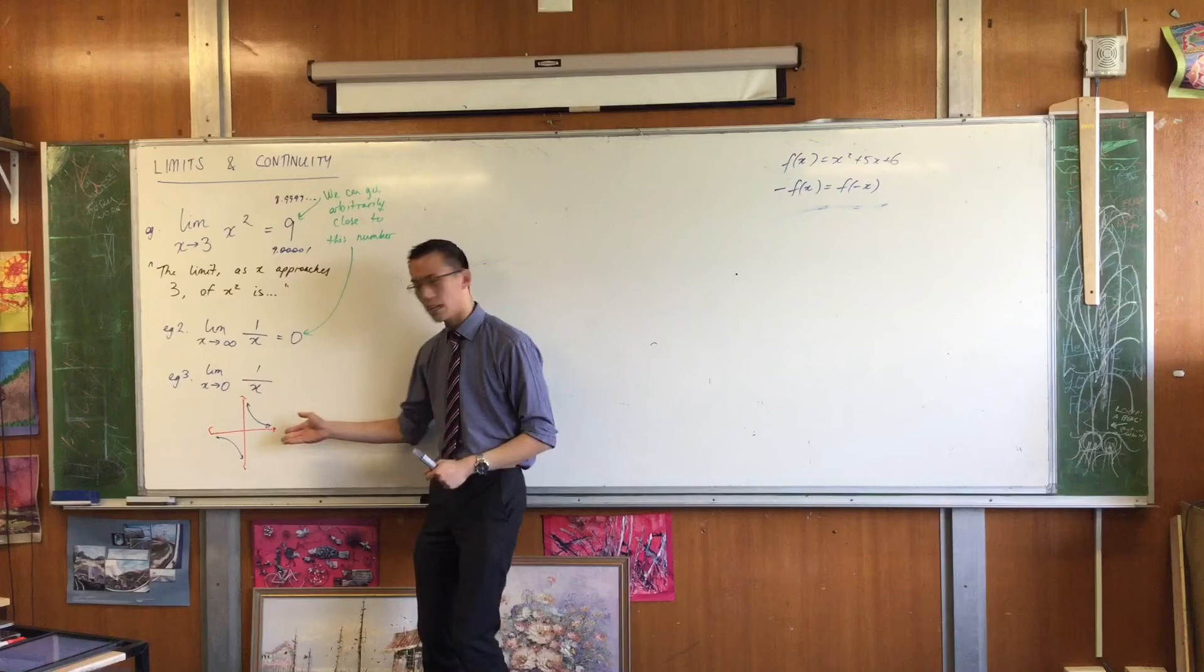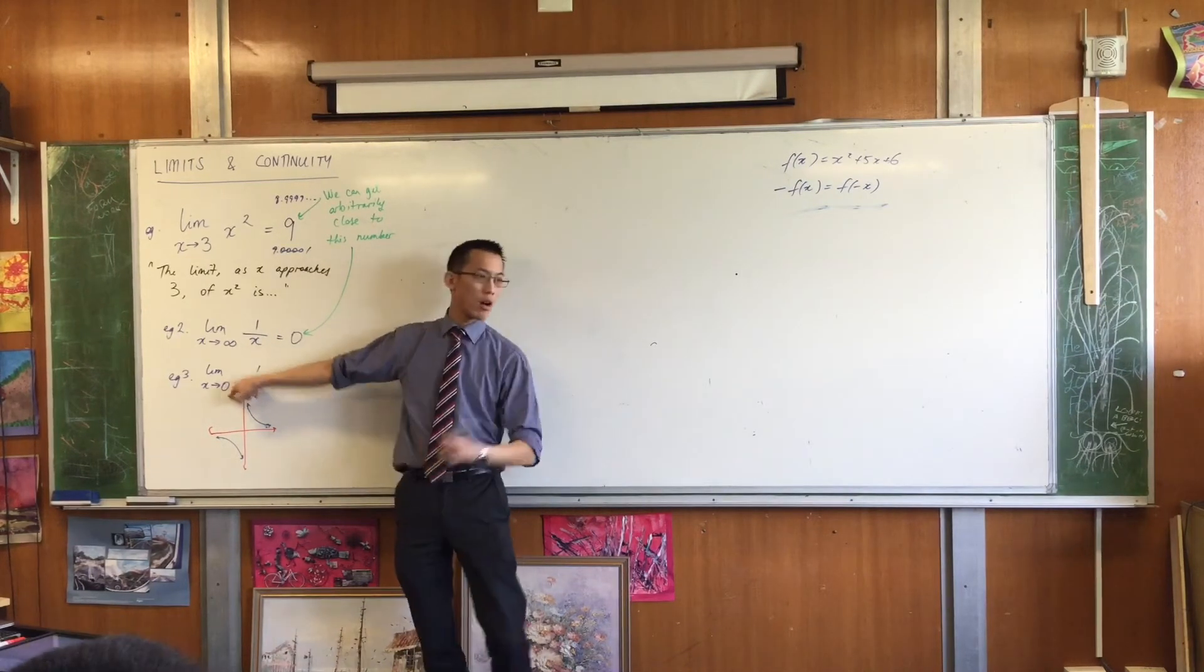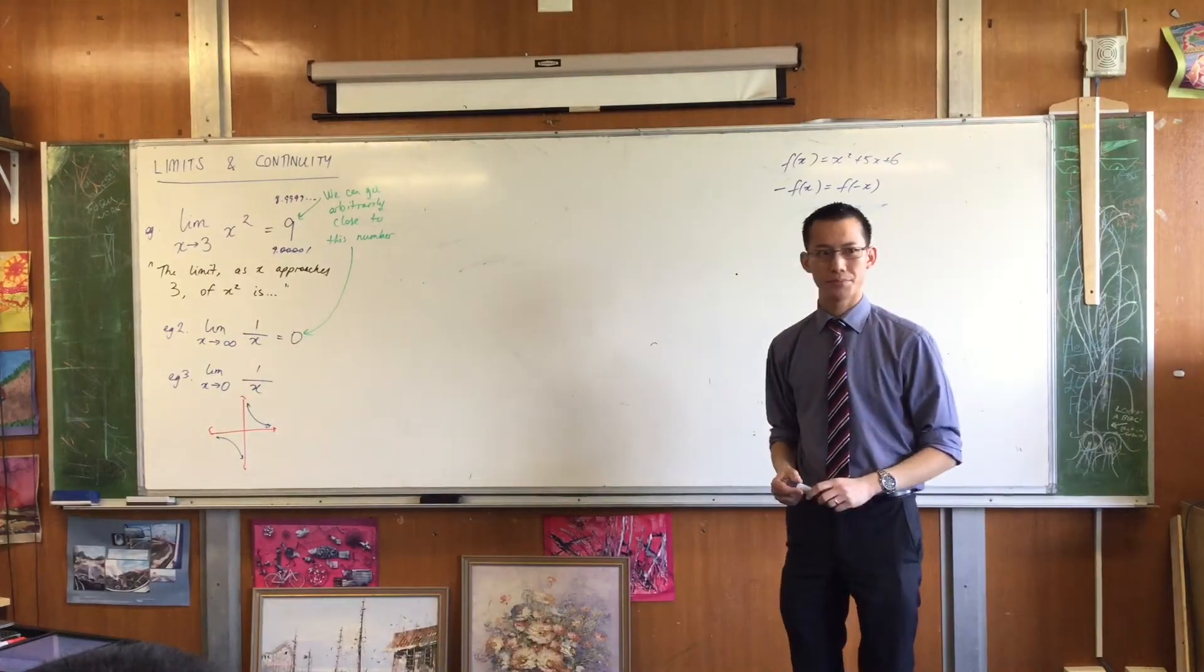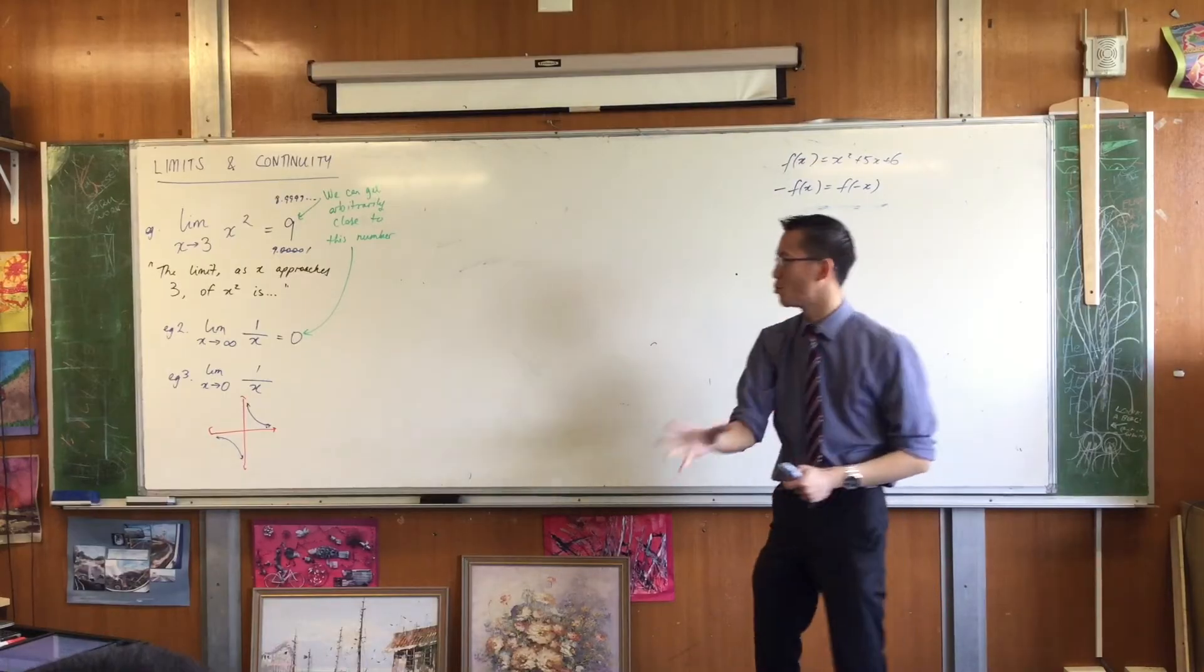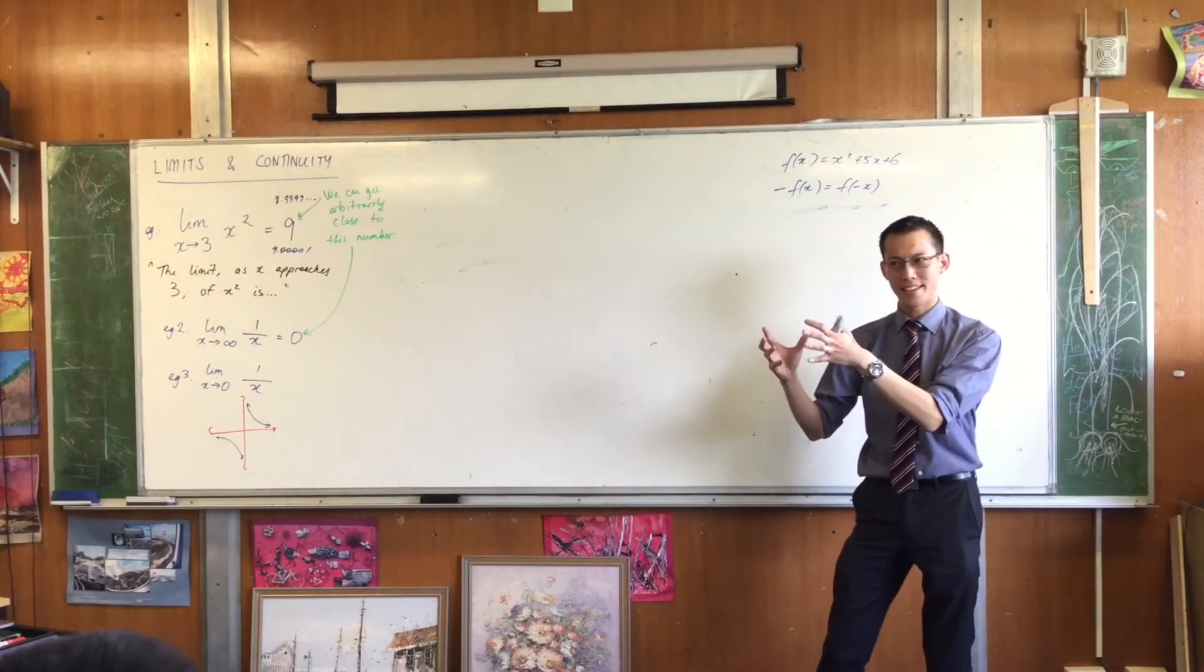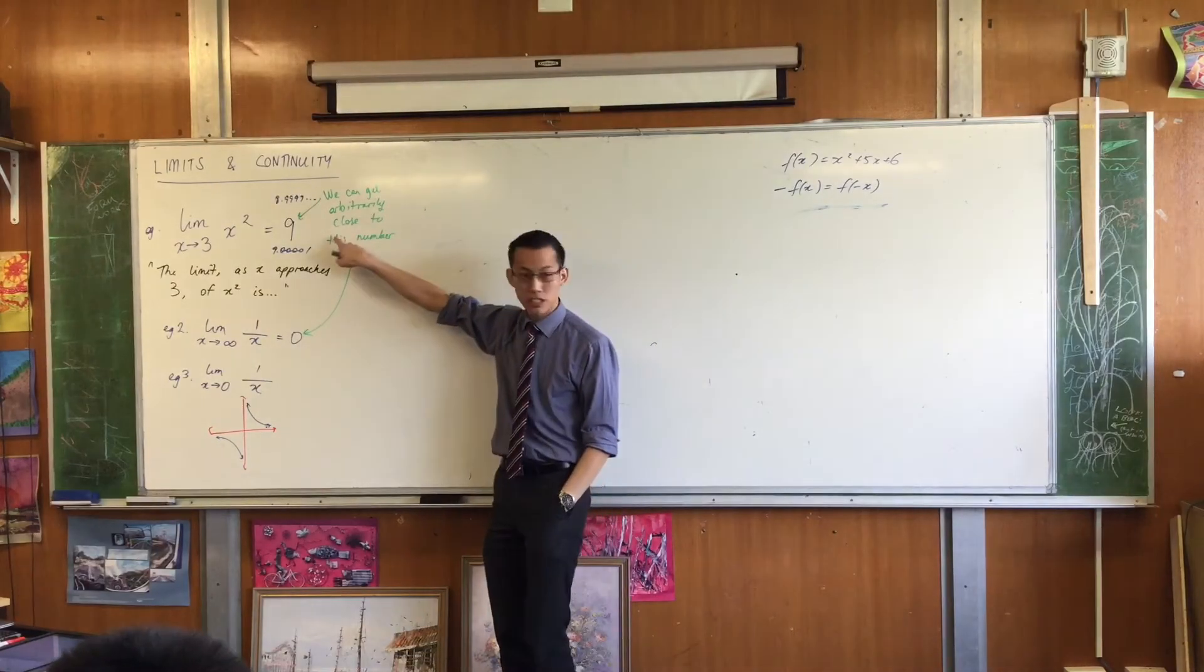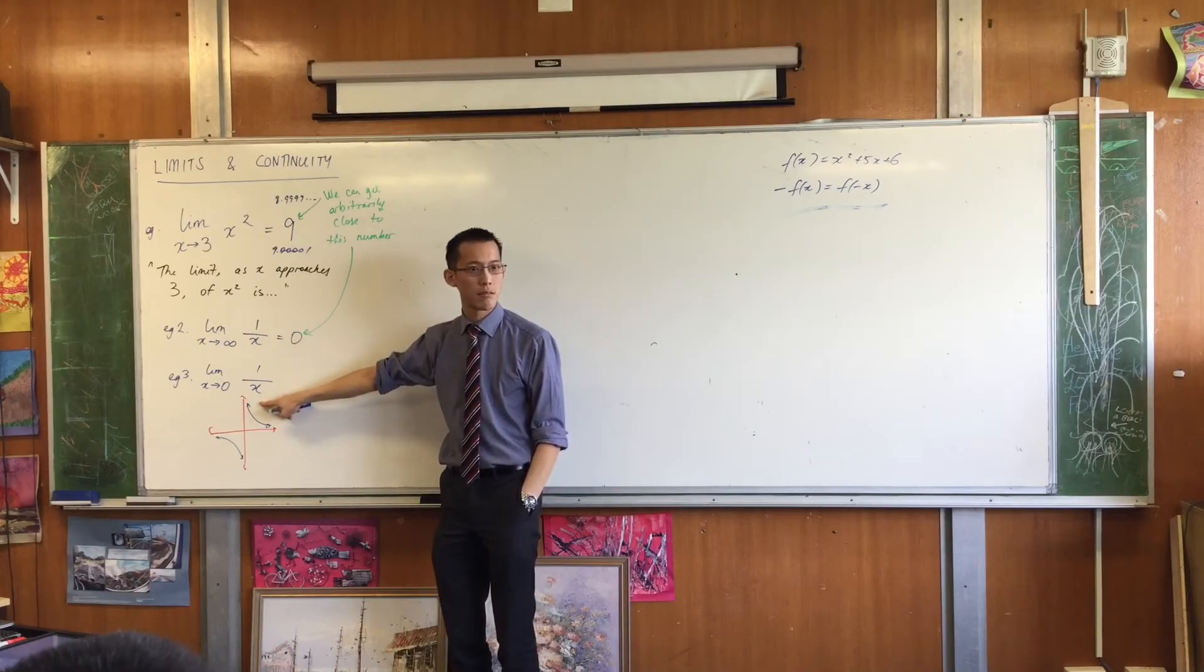if you try putting in positive values that are close to zero, like 0.1 or 0.01, et cetera, what are you going to approach? You're going to approach a huge number. In fact, now this is weird. This is where it's similar but different. You can become arbitrarily close to positive infinity, right?